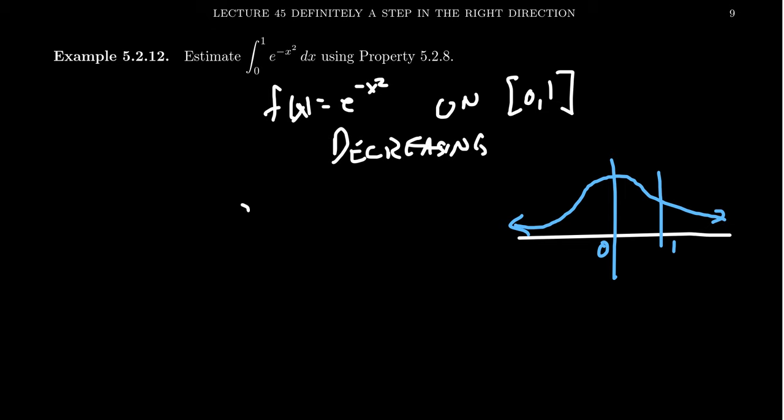So since the function is decreasing, what this tells us is that f of x will be greater than or equal to the point on the right, f of 1. Because as it's going down the curve, f of 1 down here is the smallest point on that section. And likewise, it's going to be smaller than f of 0. Because again, as this function is decreasing, the biggest point is going to be at f of 0 right there.